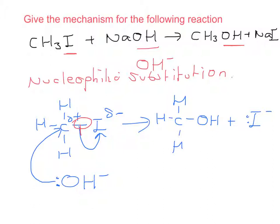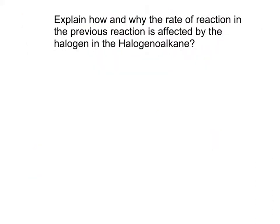Let's move on to the next and final question. Okay, so we've got to explain how and why the rate of reaction from the previous reaction is affected by the halogen in the halogen alkane. So if I changed iodine for bromine or chlorine, how would that affect my rate of reaction? Okay, so here's the answer.